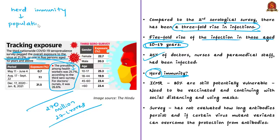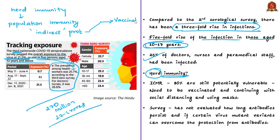Herd immunity is also known as population immunity. It is not direct protection from an infectious disease but indirect protection, and it happens when a population is immune either through vaccination or through immunity developed through previous infection. Immunity through vaccination should be preferred and supported. Therefore, herd immunity against COVID-19 should be achieved by protecting people through vaccination — not by exposing them to the COVID-19 virus. This is the standpoint of the World Health Organization.